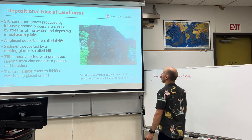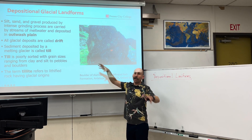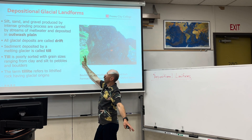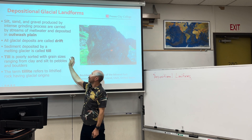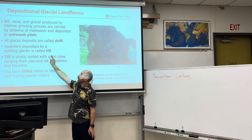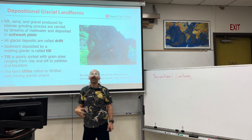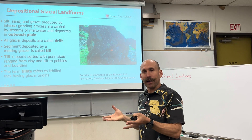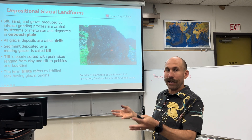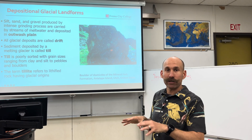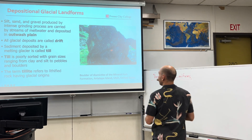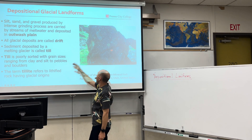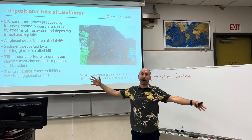The deposition usually happens in an area called an outwash plain. All glacial deposits are collectively called glacial drift, but specifically glacial deposits from melting glaciers are called glacial till. This conveyor belt picks up sediment, transports it, and that melted material is called glacial till. Till is poorly sorted with grain sizes ranging from clay and silt to pebbles and boulders — it can also be as big as a car or a house.